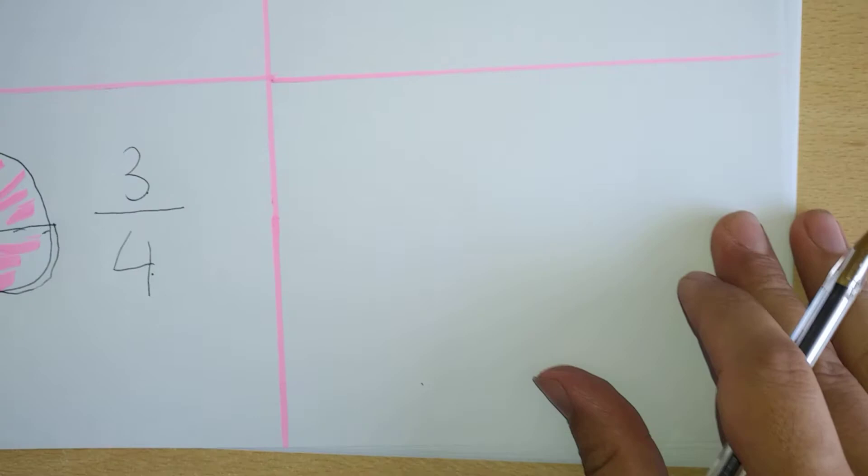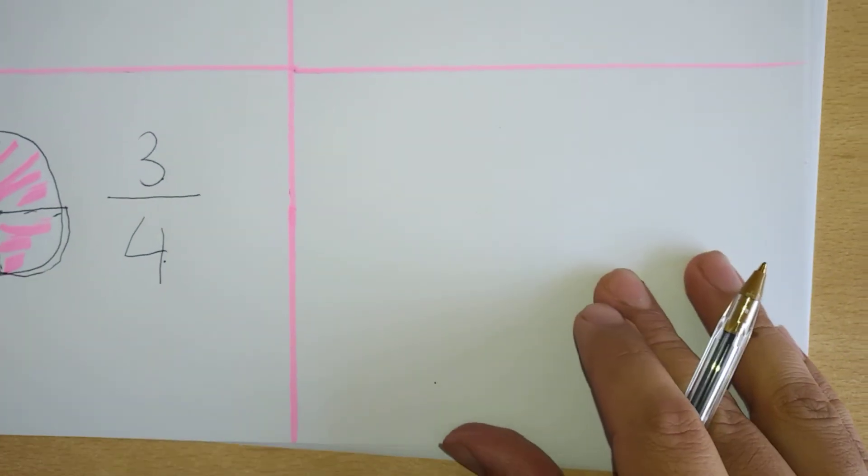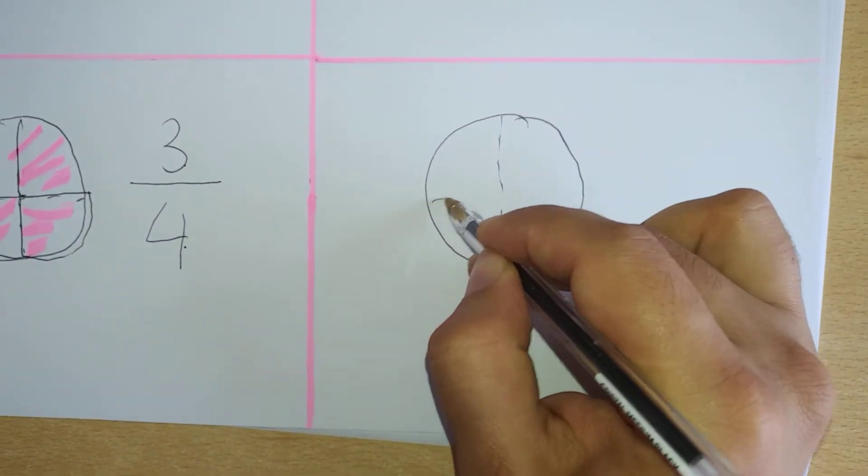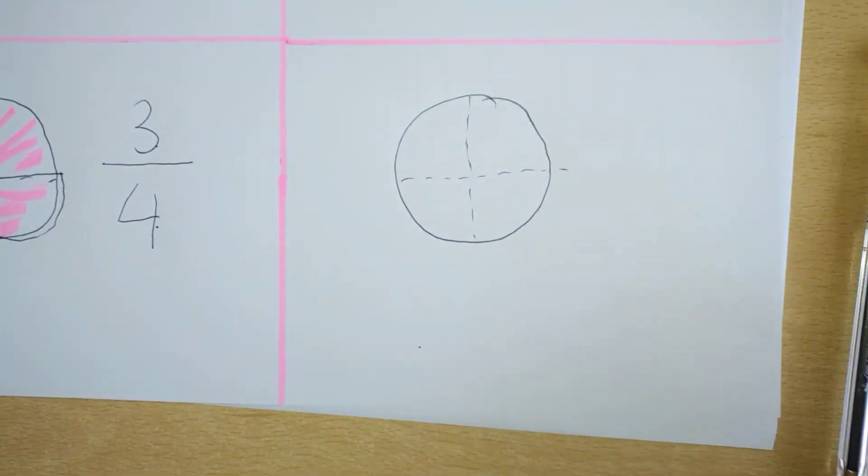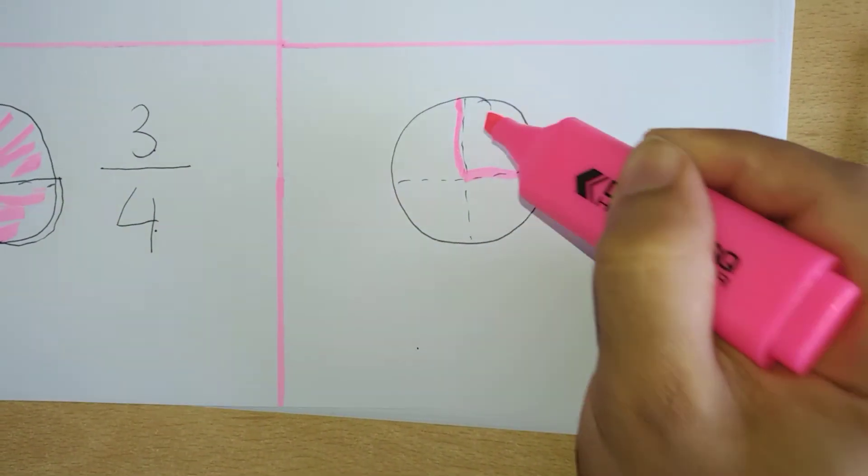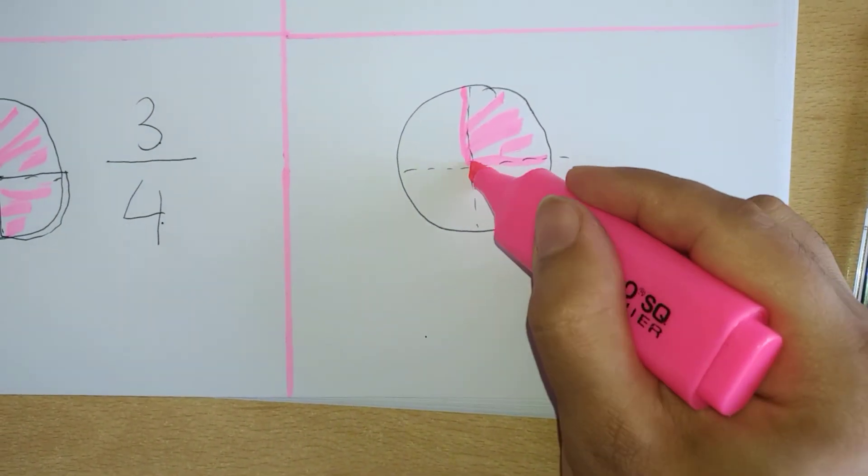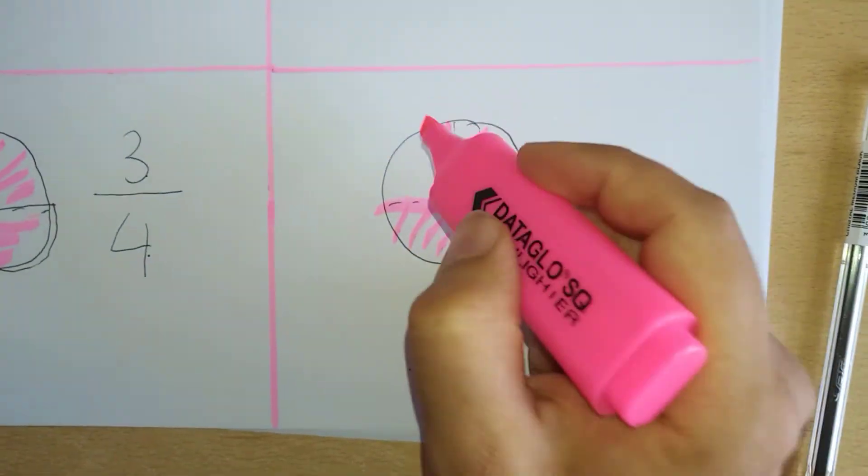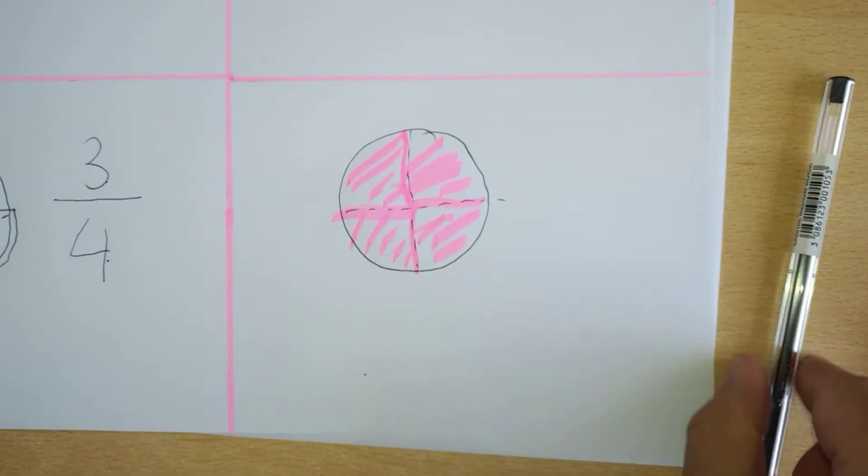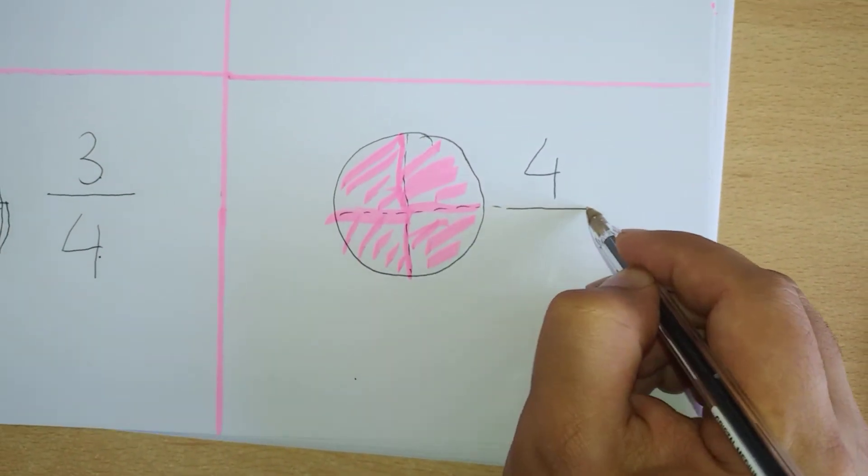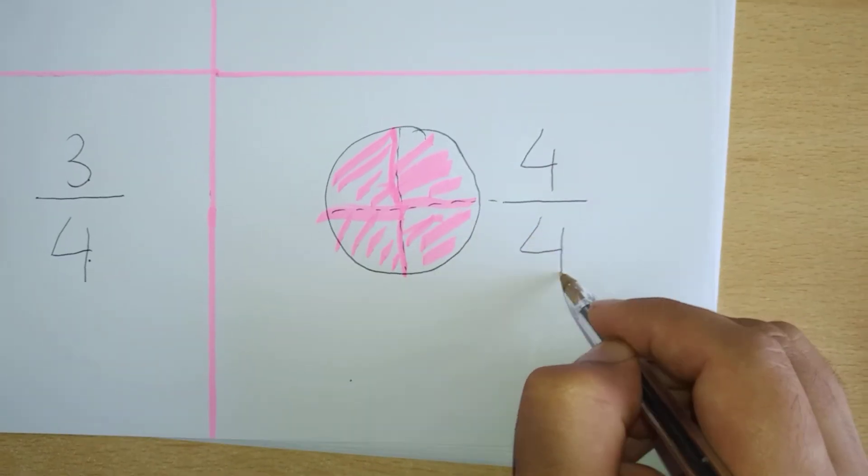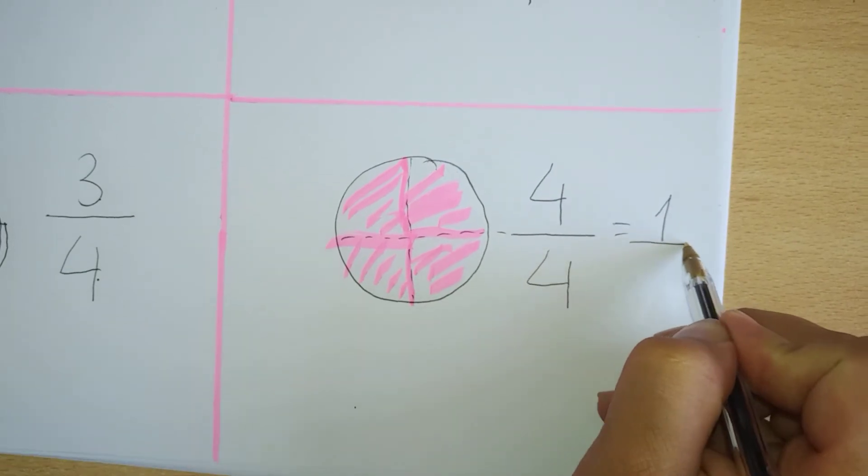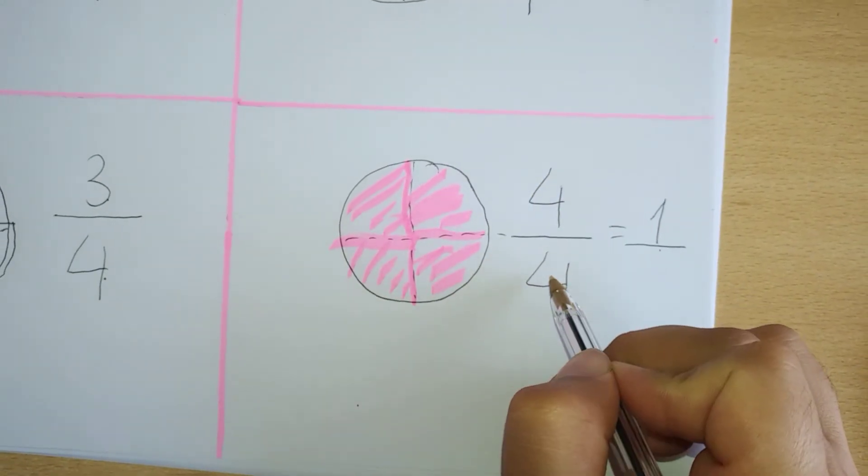And finally, the whole pizza is four out of four, if you eat the whole pizza. Let's see. You will have one quarter, second quarter, third quarter, and you will have the fourth quarter. So which is exactly four pieces out of four, which makes a whole one pizza. A whole pizza equals four out of four.